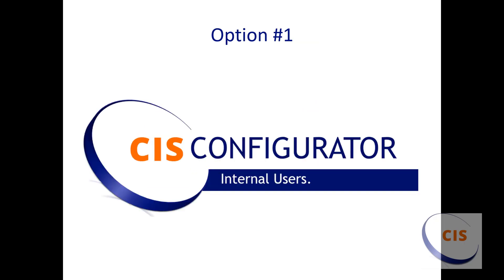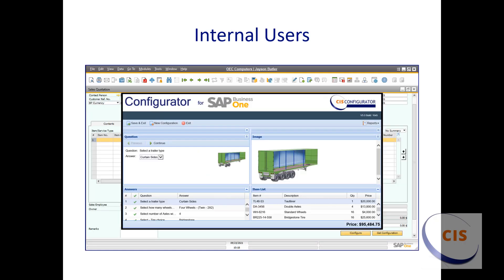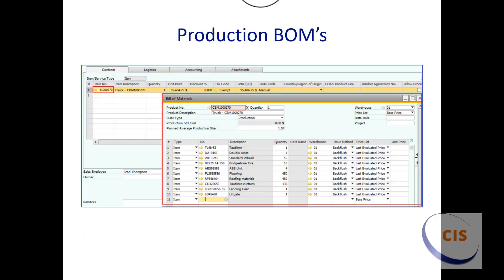One option is using CIS Configurator inside SAP Business One, allowing internal SAP users to create a sales quote, sales order, and/or a production order if required. The user is guided by answering questions and the answers resolve to items and pricing. The Configurator uses the price list assigned to the SAP Business Partner. Pricing is dynamic. In line with SAP, the Configurator can be set up to create either production BOMs, assembly BOMs, or just sales items.